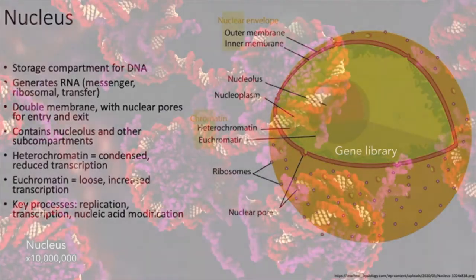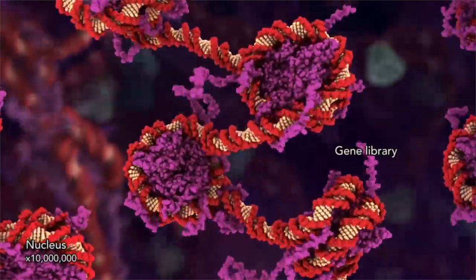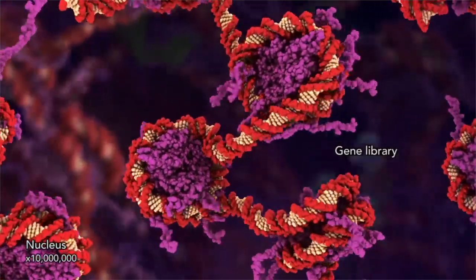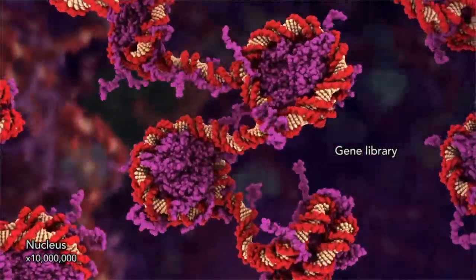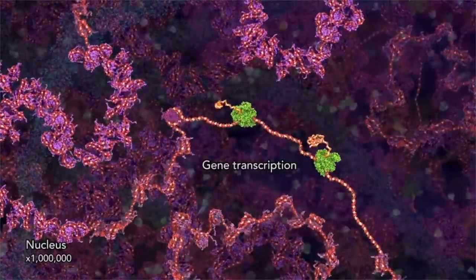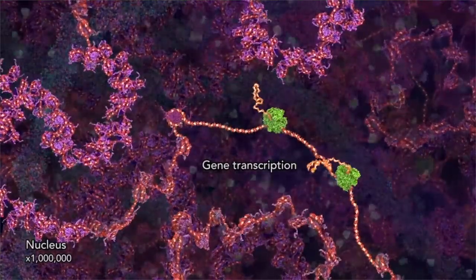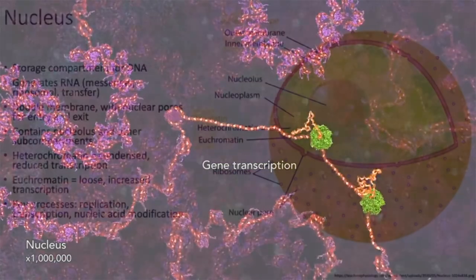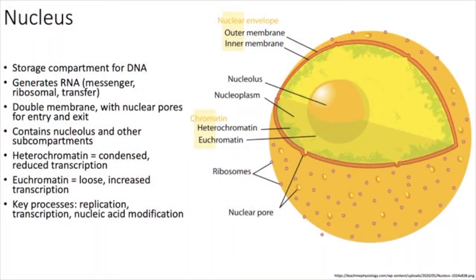Ribosomes are massive enzymes that facilitate the production of proteins. They have two pieces: a large subunit and a small subunit. You stick your messenger RNA in between and use it as a guide. Transfer RNA brings amino acids and bridges the gap. Ribosomes perform translation — going from the language of nucleic acids to the language of amino acids.